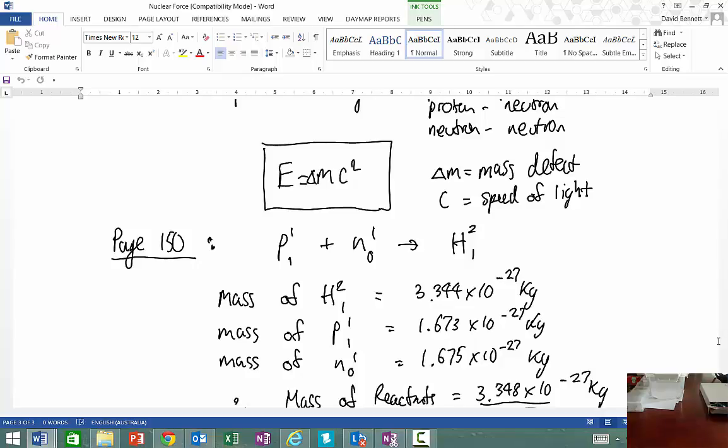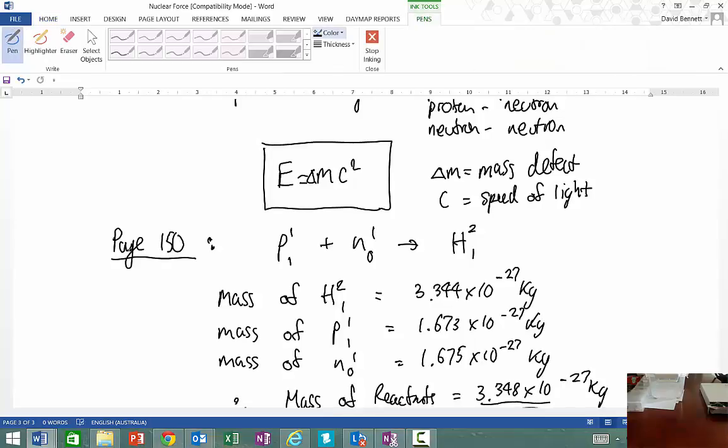When we add the mass of our reactants, our reactants here are the proton and the neutron. So we get this value here for the mass of our reactants.